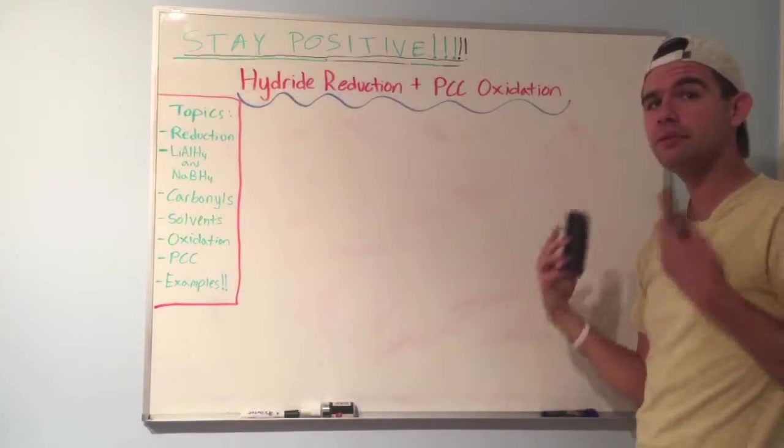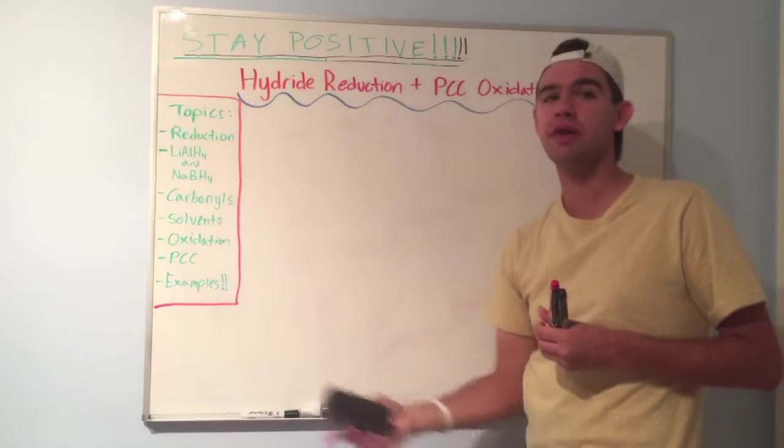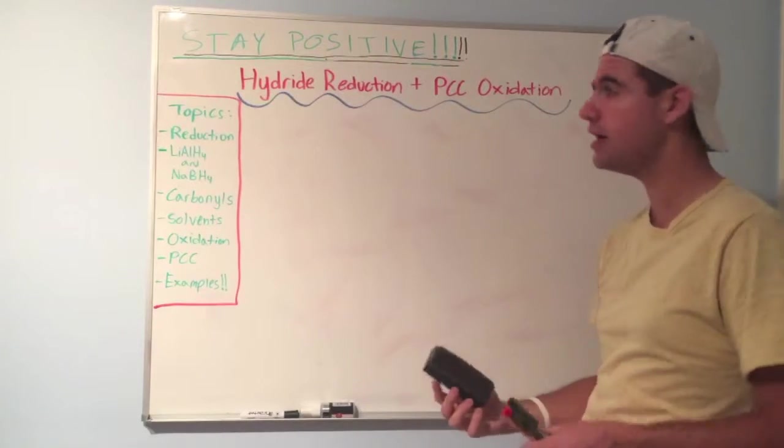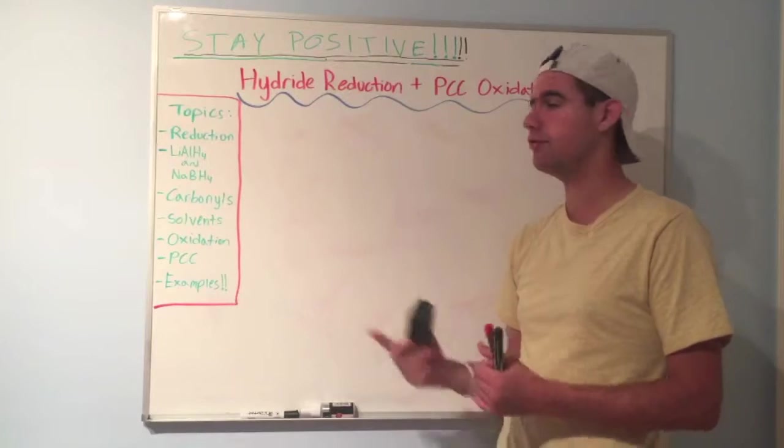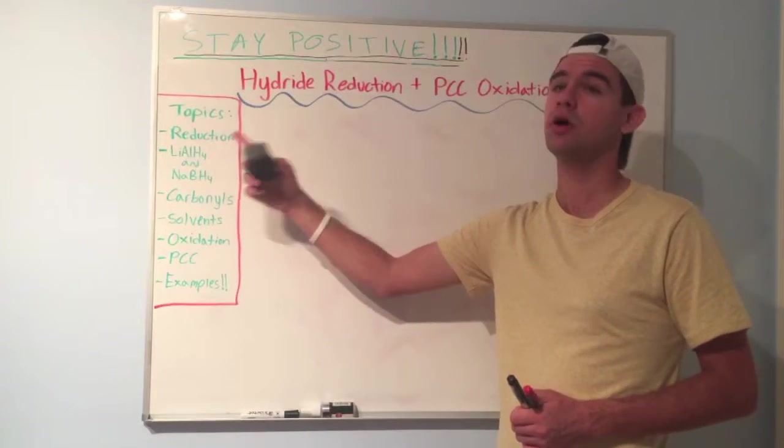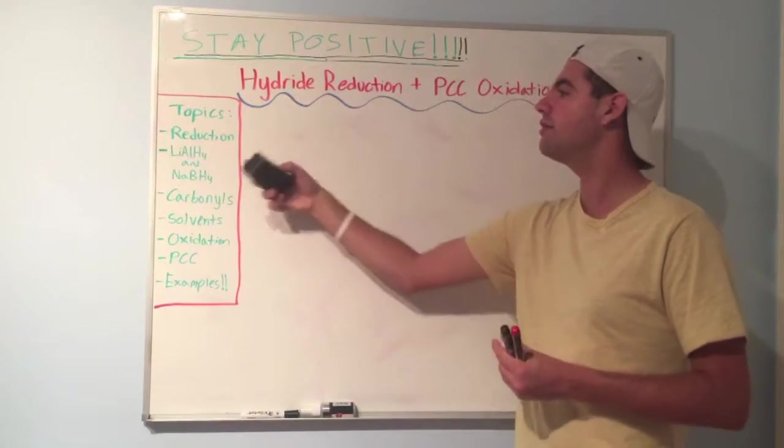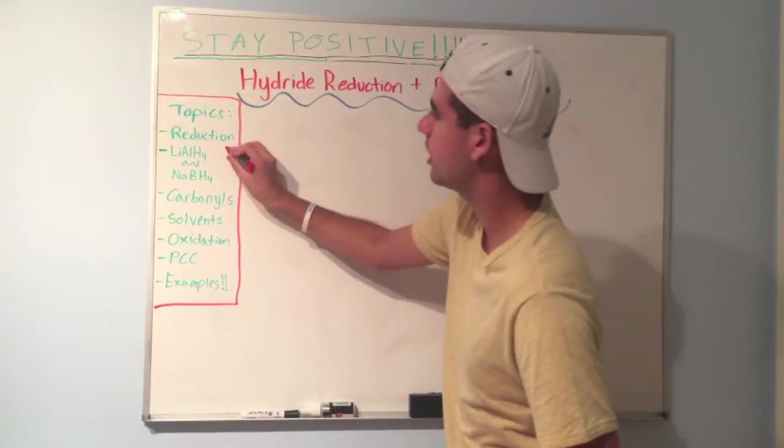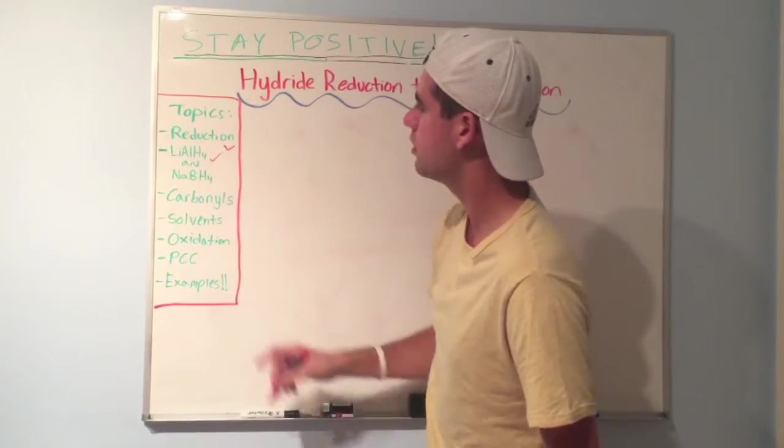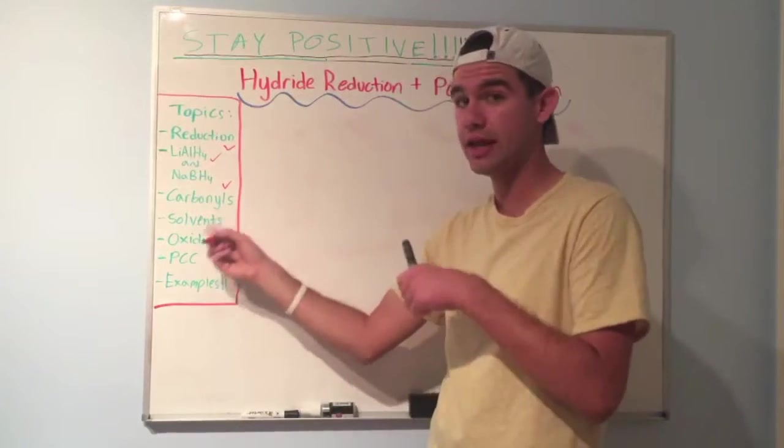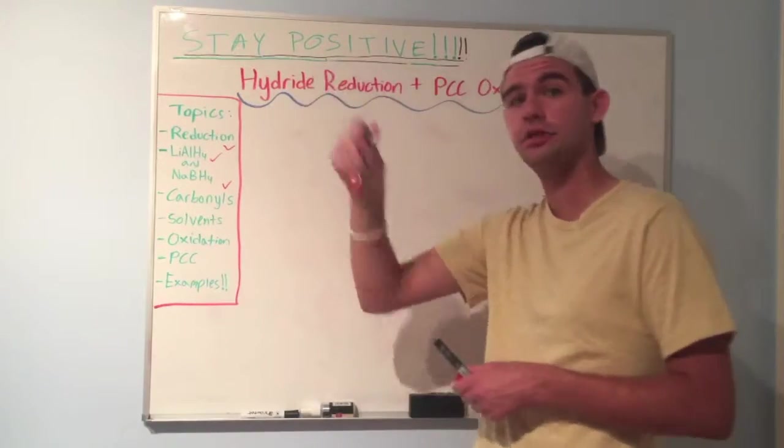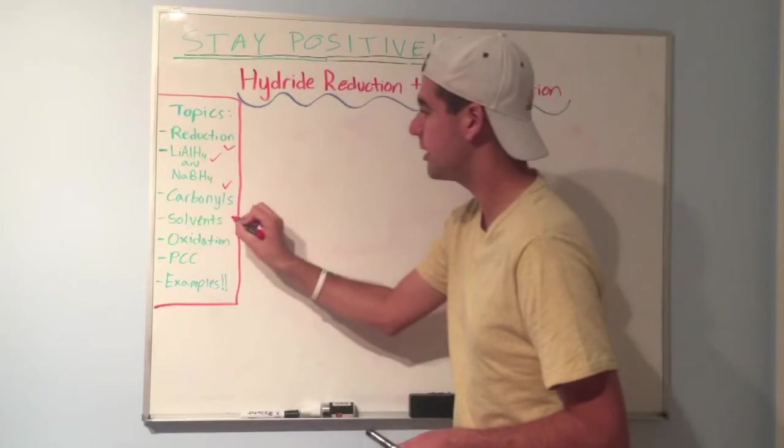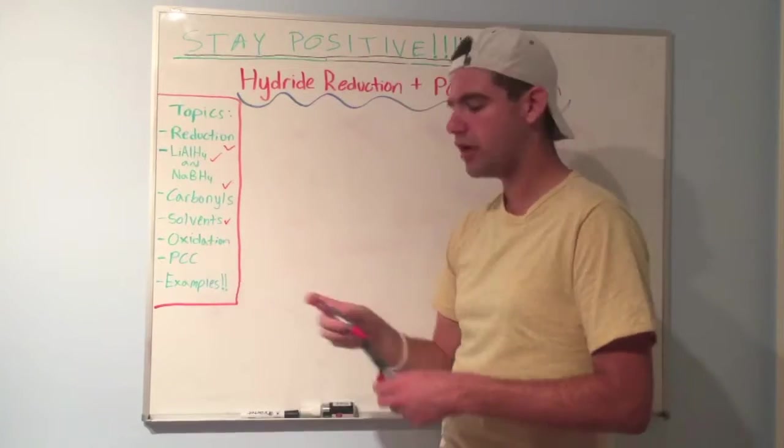So you can see that both LiAlH4 and NABH4 serve the same function. They're both sources of hydrogens, but their mechanisms are a bit different. LiAlH4 requires workup, NABH4 doesn't, and they require different solvents. So let's put our check marks. We talked about reduction. We talked about those two carbonyls. Remember the electrophilic site is the carbon attached to the oxygen. We talked about the different solvents. Now let's move on to oxidation.